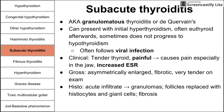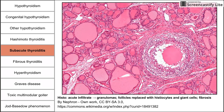The thyroid is asymmetrically enlarged, fibrotic, and very tender on exam — tenderness is the key clinical finding. On histology, we see acute infiltrates, granuloma formations, follicles replaced by histiocytes and multinucleated giant cells characteristic of granulomas, and possibly fibrosis. Treatment is NSAIDs and prednisone, primarily for pain relief.